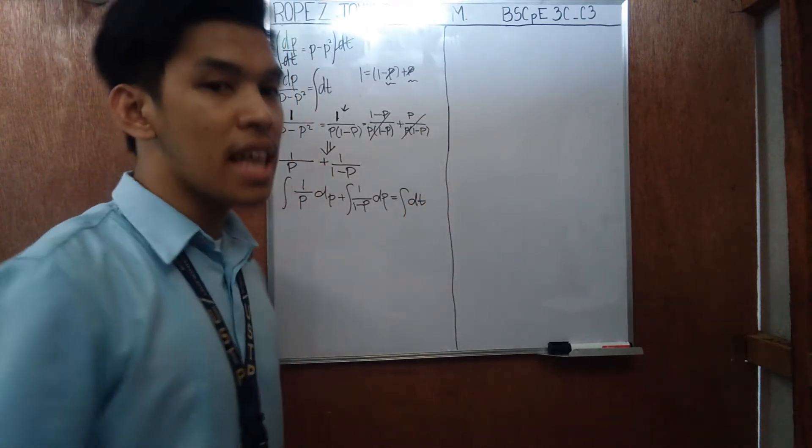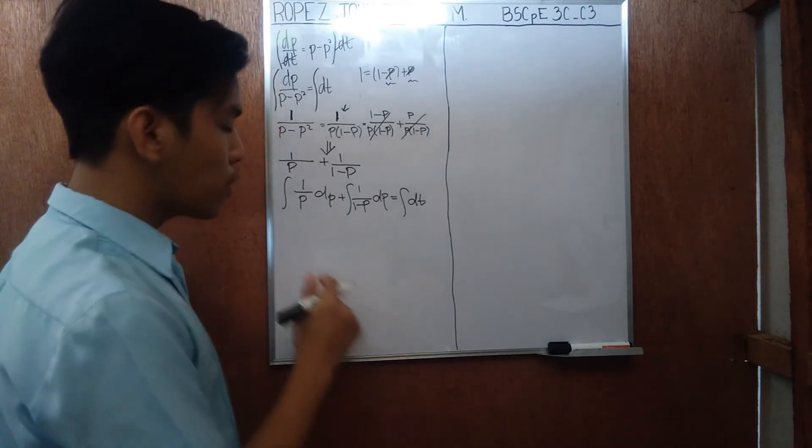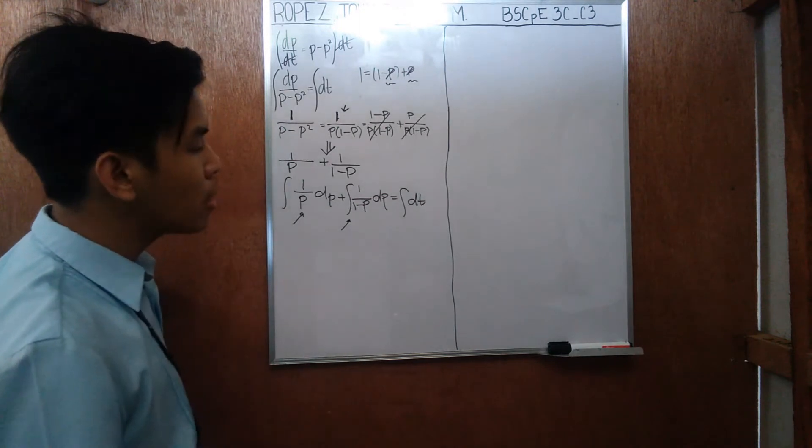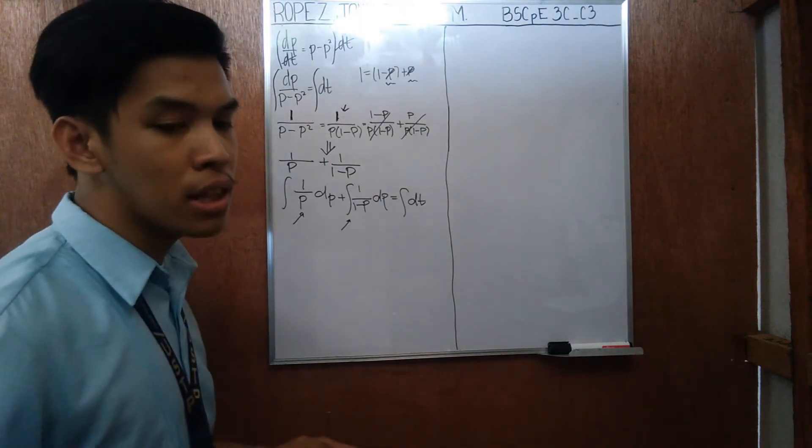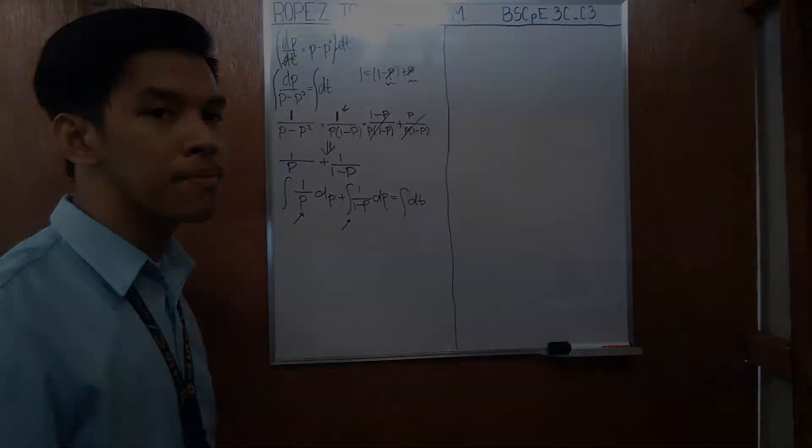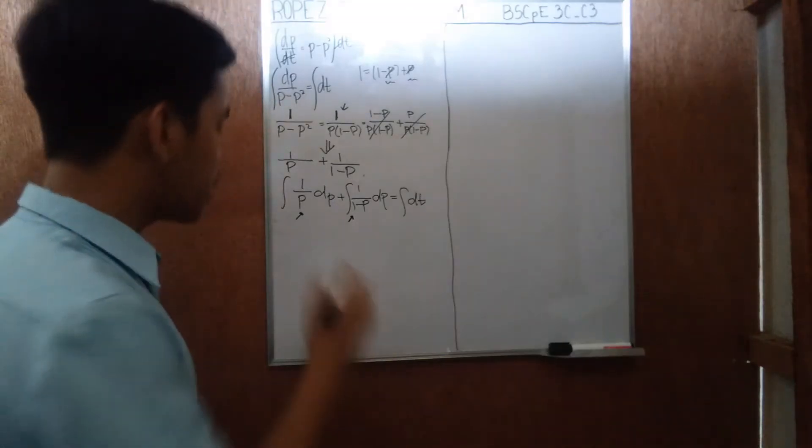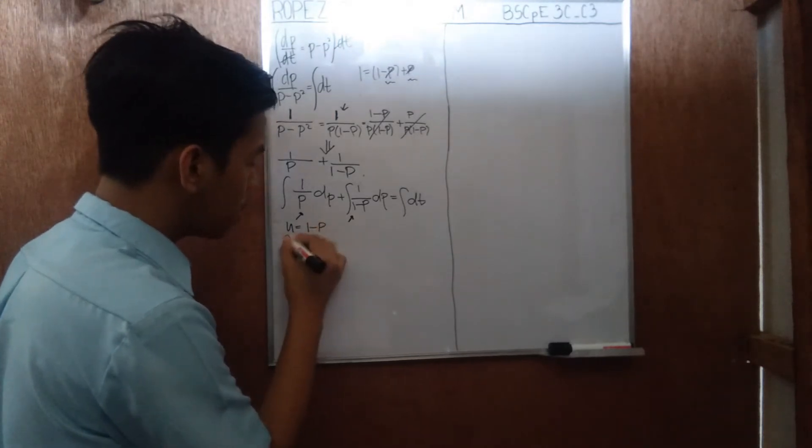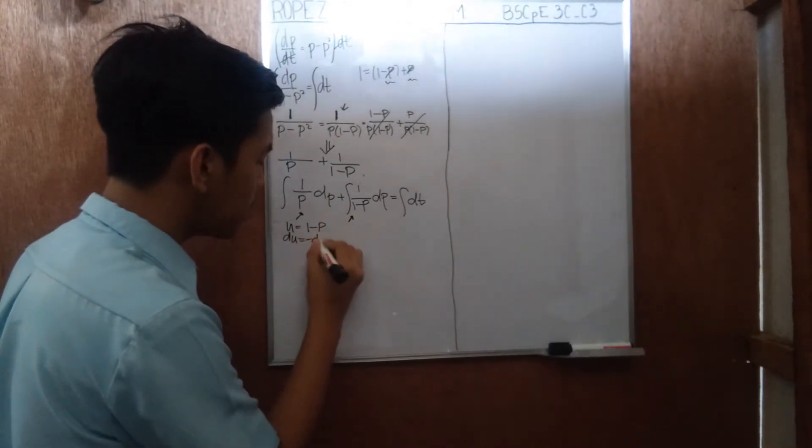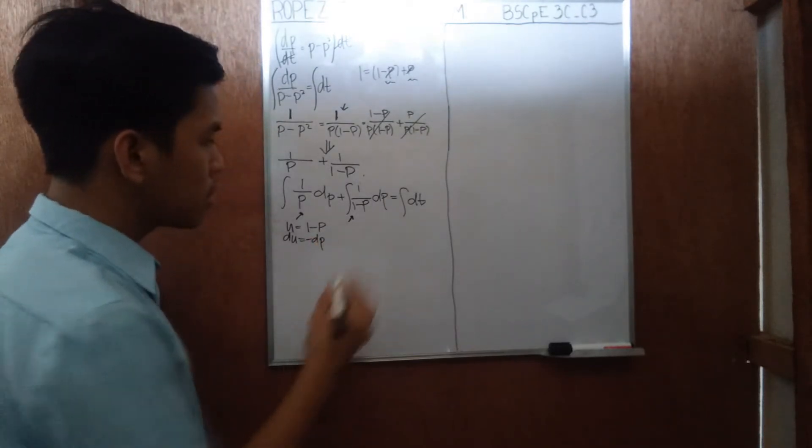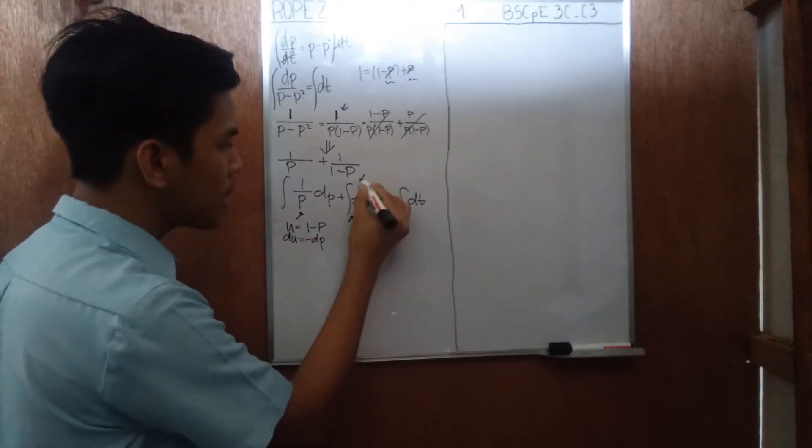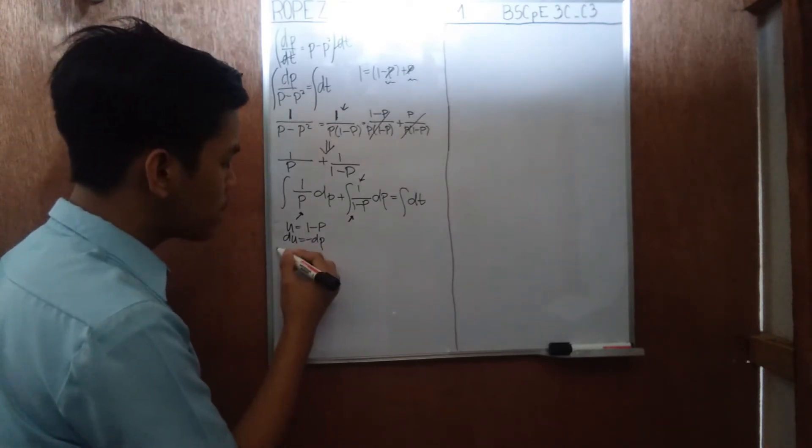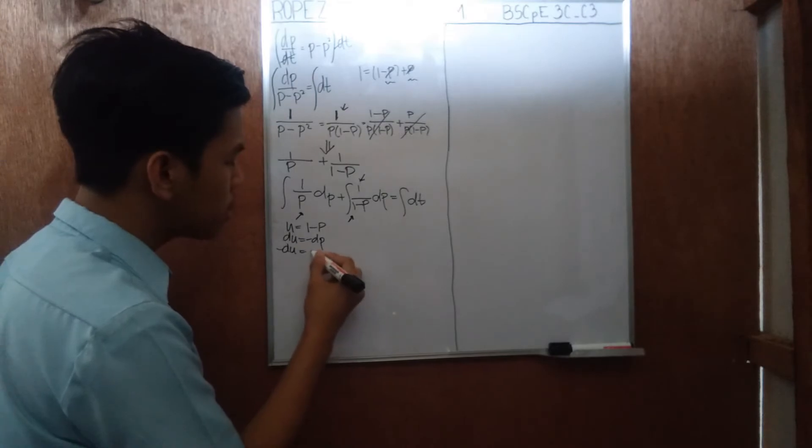And over here, we still have dp. So first integral and the second integral would give us a logarithmic function, a natural logarithmic function. So we let u is equals to 1 minus p, du is equals to negative dp. So since we don't have a negative sign here, we will multiply or divide this by negative 1. So this will give us negative du is equals to dp.